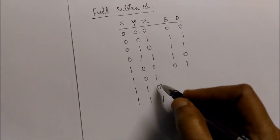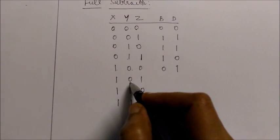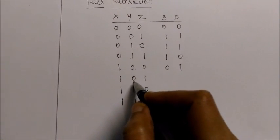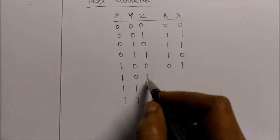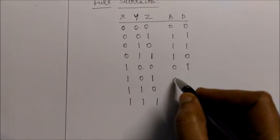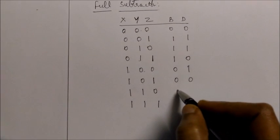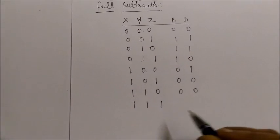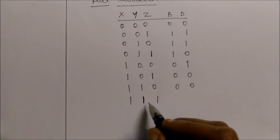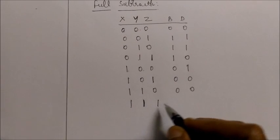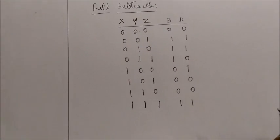For 1 minus 0 minus 0, it is straightforward: borrow is 0 and difference is 1. For 1 minus 0 minus 1: 1 minus 0 gives borrow 0, difference 1, and subtracting z=1 gives difference 0, borrow 0. For 1 minus 1 minus 0: difference is 0, borrow 0. For 1 minus 1 minus 1: 0 minus 1 gives difference 1, borrow 1.